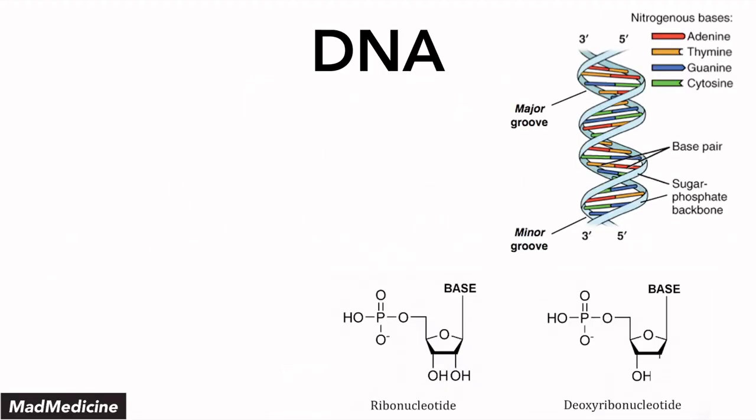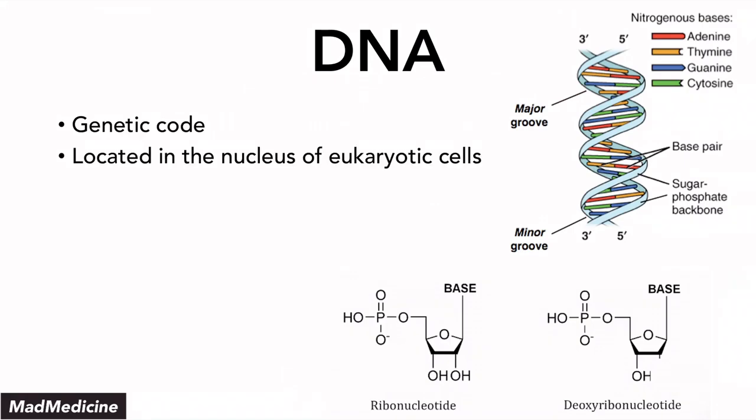Let's talk about DNA really quickly. DNA is essentially our genetic code and it is located in the nucleus of eukaryotic cells like us. In prokaryotic cells, it's located in the cytoplasm.